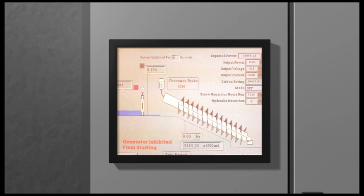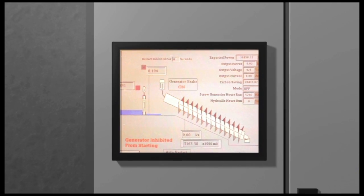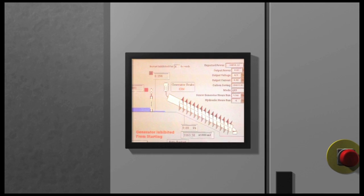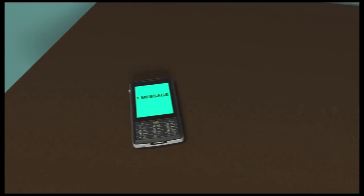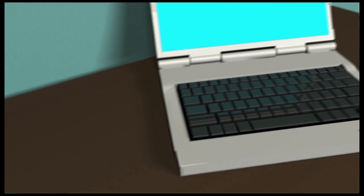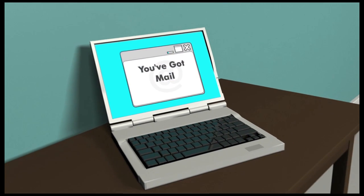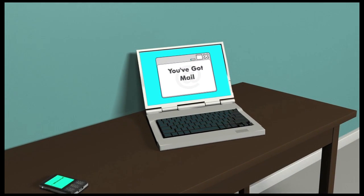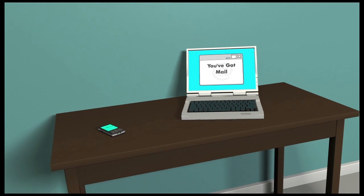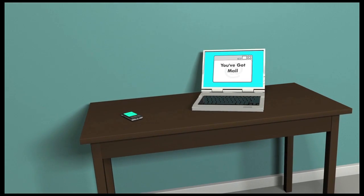The software is designed to control the equipment in order to extract maximum power from the available flow. The Spaans Babcock control system controls the equipment locally or remotely. The control system can be configured to send text messages to mobile phones or emails to the owner or operator.